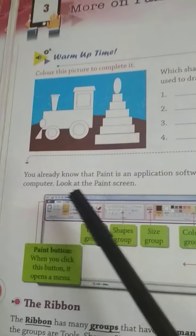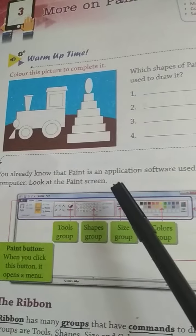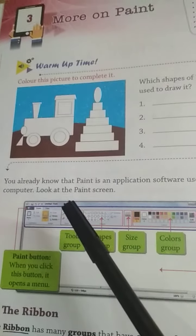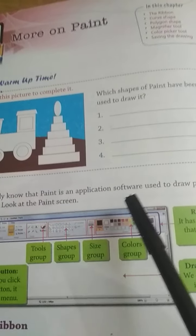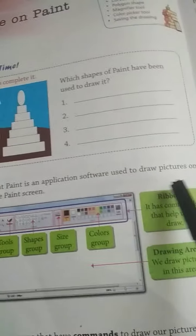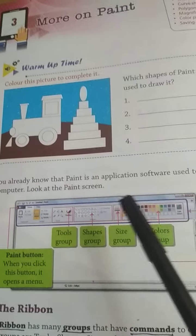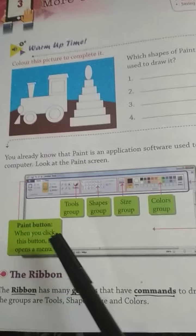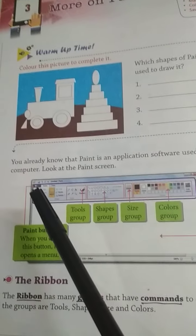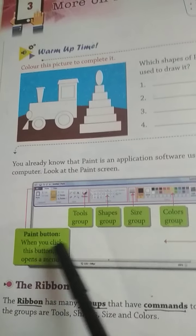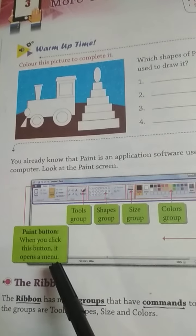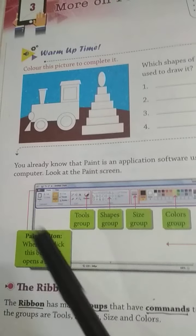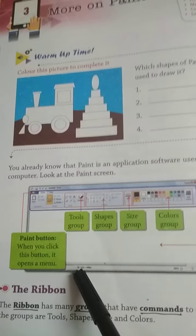Now let us come to the chapter. You already know that paint is an application software used to draw pictures on a computer. Aap pehle bhi padh chuke hain ki paint ek application software hota hai jiske through hum picture draw karte hain computer par. Look at the paint screen. Upper left corner pe aapke yahan paint button hai. When you click this button, it opens a menu — jaise hi aap isko click karte hain, ek menu open ho jata hai.